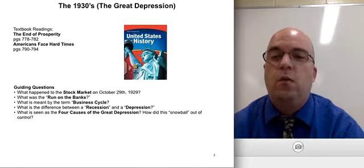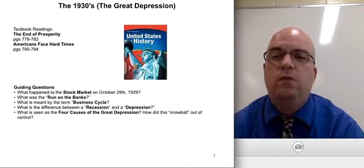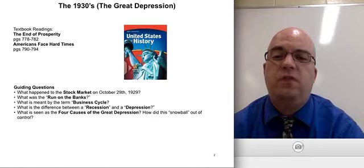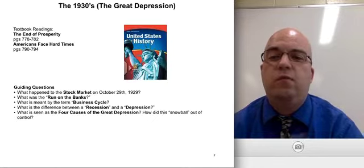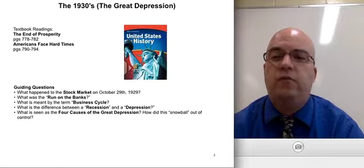Guiding questions: What happened to the stock market on October 29th, 1929? What was the run on the banks? What is meant by the term business cycle? What is the difference between a recession and a depression? What are the four causes of the Great Depression? How did this snowball out of control?